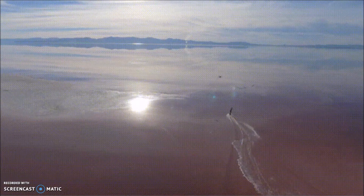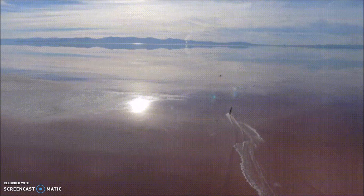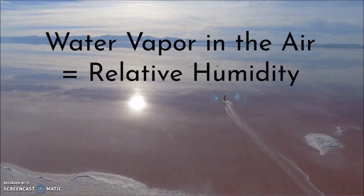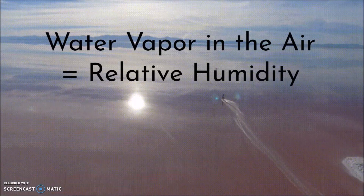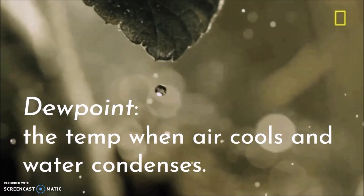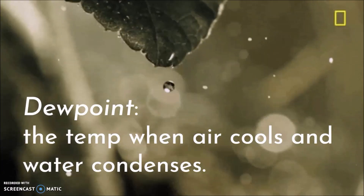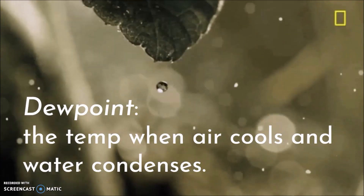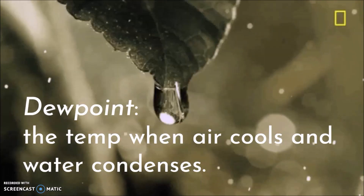Condensation is when water goes from water vapor in the air to liquid to ice, and the heat that the water is holding onto, it lets go into the air around it. The water vapor that's in the air is called relative humidity, and the temperature that's needed for that water to cool down and condense from water vapor into liquid is called a dew point.